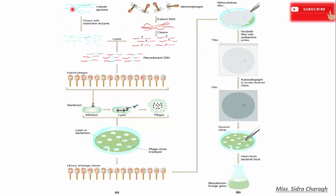First, we cleave the cellular genome with restriction enzyme. These are bacteriophages — we extract the phage genome and then cleave it. After cleavage, we use DNA ligase to ligate our desired gene of interest into the phage genome, and they become recombinant DNA. Then we transfer this recombinant DNA into the phage head. These phages will infect bacterial cells, and inside the bacterial cells they replicate themselves, and after lysis they form plaques.